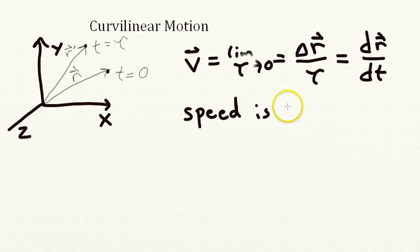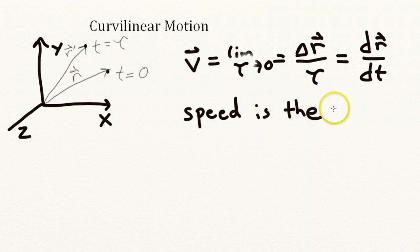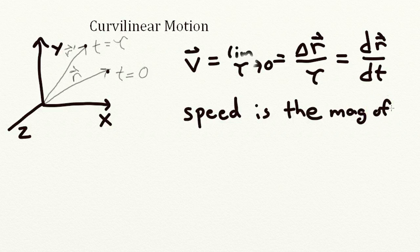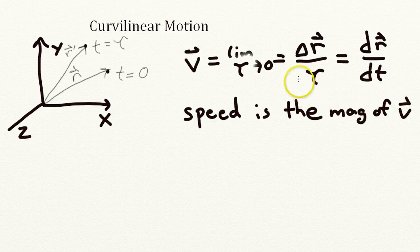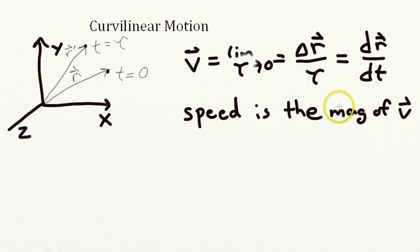And the speed is just the magnitude of v. So remember, a vector has a magnitude and a direction, and the speed is the magnitude of the velocity vector.